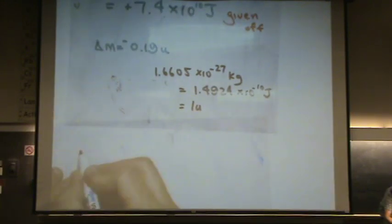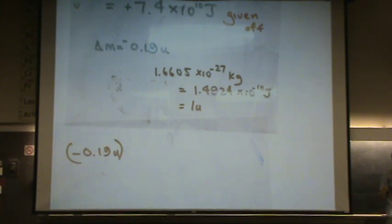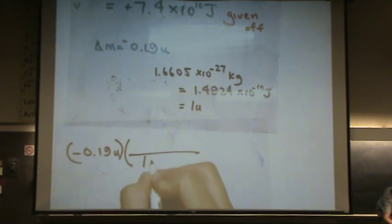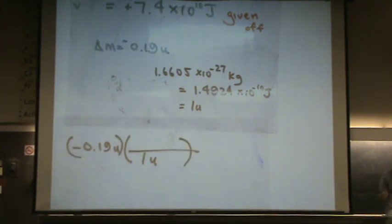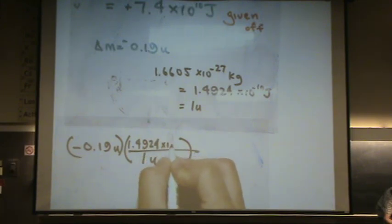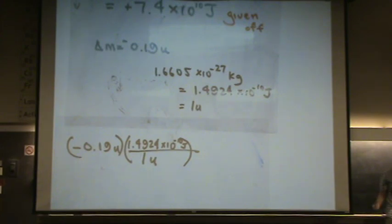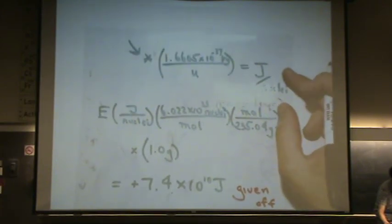What you could have done is said, oh, I have 0.19 u. Let's just consider this a conversion type problem. And say, well, 1 u, I want to convert that to joules, and that's 1.4924 times 10 to the minus 10 joules. There we go. And that would have given you a joule per nuclei answer, which would have been the same as this answer up here. Does that make sense?